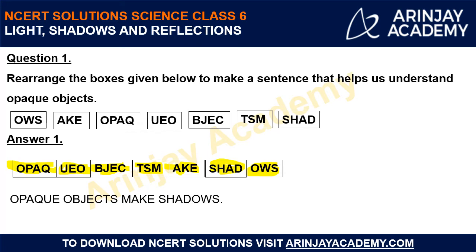So we know that opaque objects do not allow light to pass through them. As a result, they form a shadow behind them. This is the statement we have figured out, and it also helps us in understanding opaque objects. Let's move to the next question.